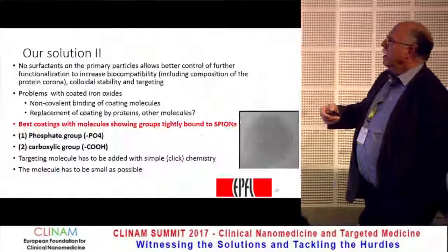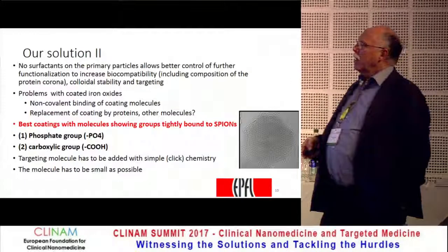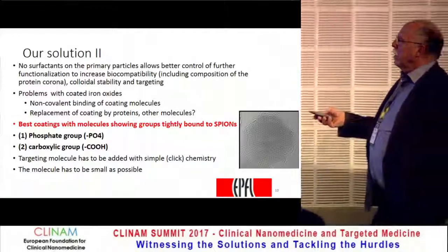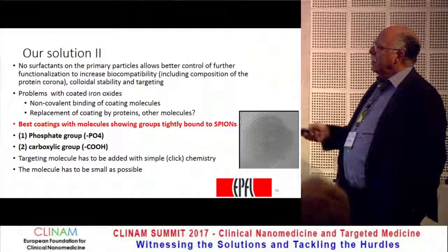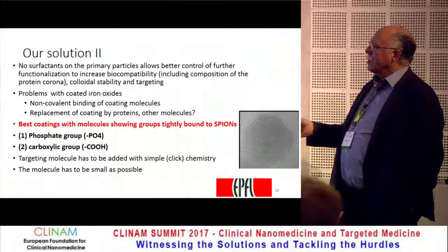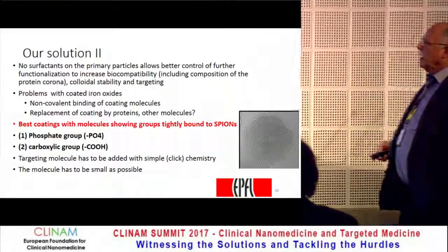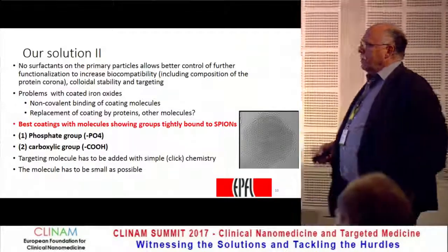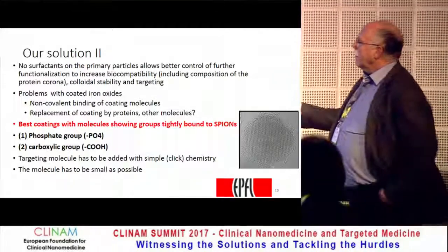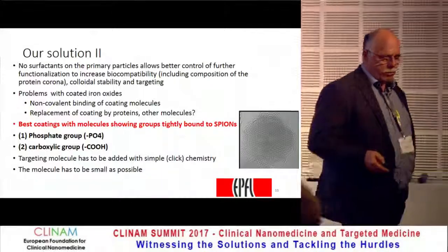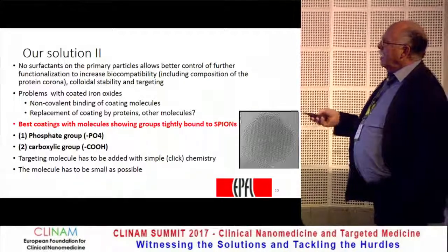With no surface additives, we have fewer problems with biocompatibility, so we are much freer in adapting. The next step is the coating: even though there is normally no covalent binding of coated molecules, we ensure at least strong physisorption or chemisorption on the surface so proteins do not directly replace the coating. We use phosphate groups or carboxylic groups, which give strong adhesion to iron oxide. Then we add the targeting molecule — preferably a small molecule like an aptamer, not a large antibody — so the particle remains small.